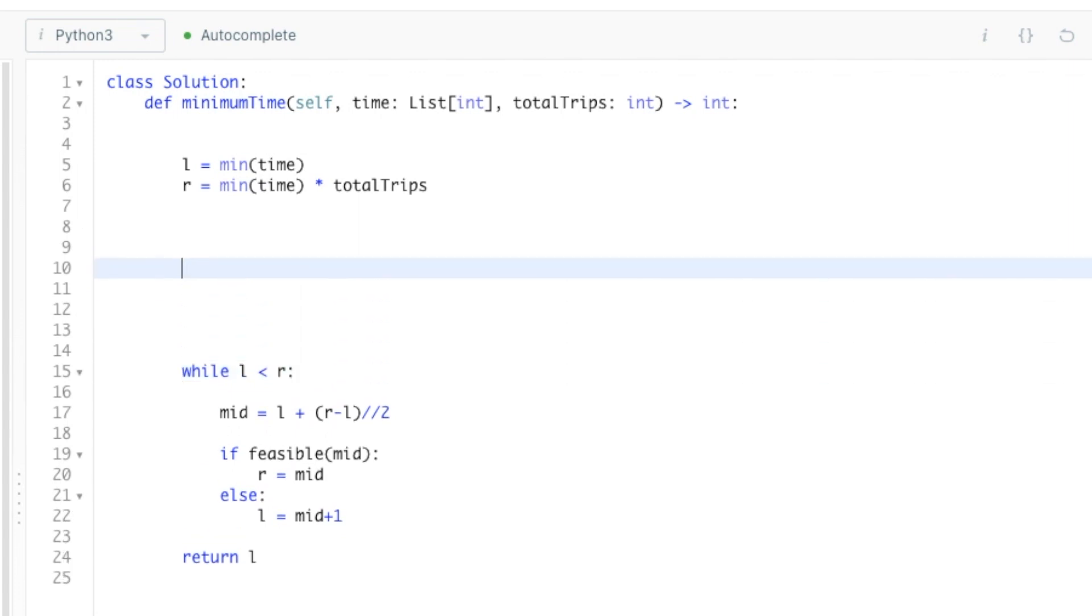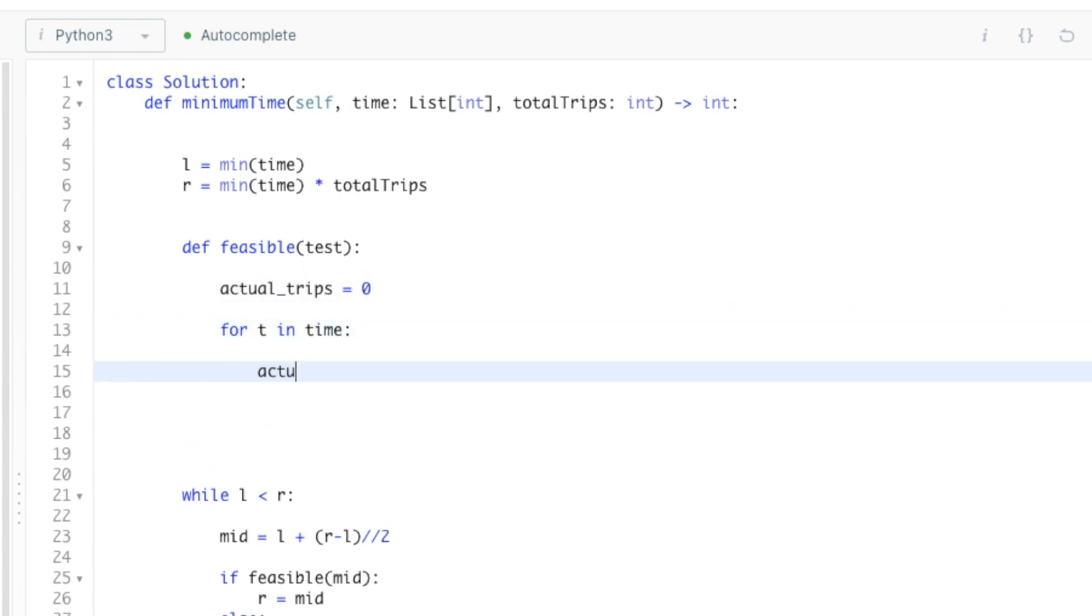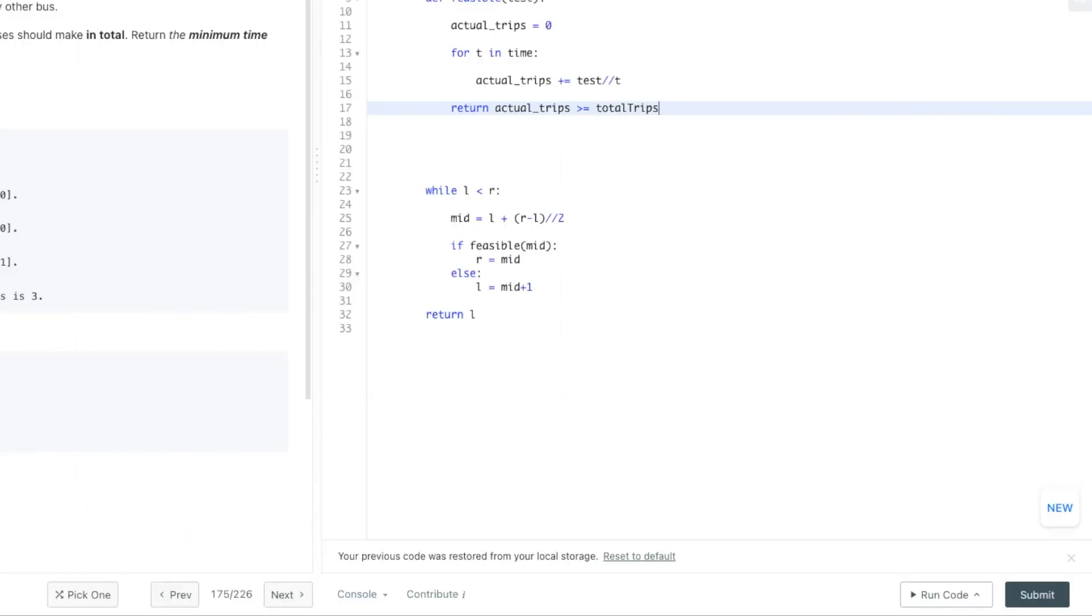So first we need to initialize a variable that'll hold how many trips we can take at the test hour. I'll call it actual trips. Then we iterate through the time array to see how many trips each bus can make at the given hour. Make sure to use floor division, because half trips don't count. Then we just need to compare actual trips - if it is greater than or equal to total trips, determine whether or not the test hour can make total trips trips. All right, our answer should be ready to go. Let's test it out.